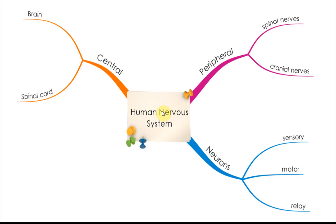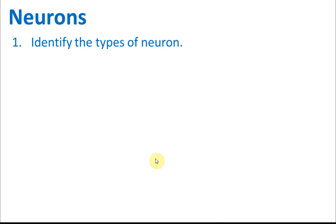We have just discussed the human nervous system, where we covered the central nervous system and the peripheral nervous system. Now let's move on to the neuron. There are three types of neurons: the sensory neuron, motor neuron, and the relay neuron. For neurons, there are three things that you need to know.